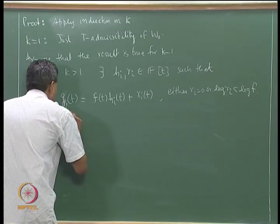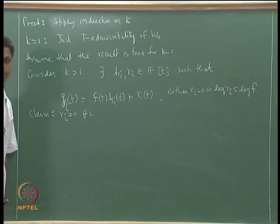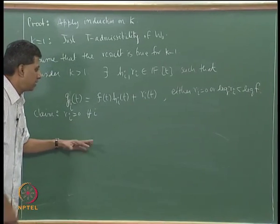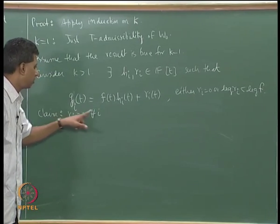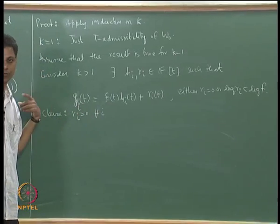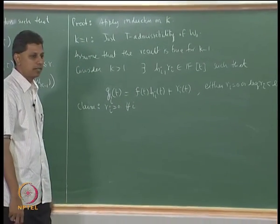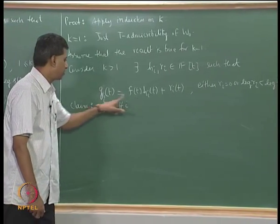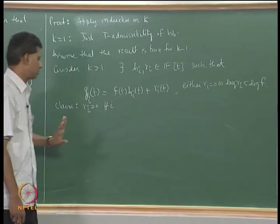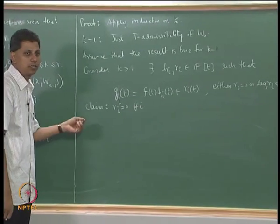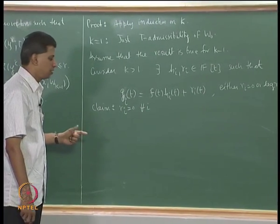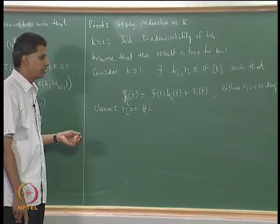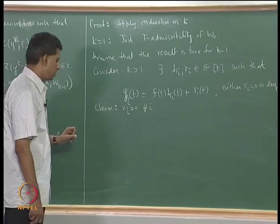The claim is that r_i equals 0 for all i. If we have proved this claim, it would follow that f divides g_i, which is what we want to show. The second part follows from admissibility. We want to show f divides g_i, so we will show r_i is 0. The proof will be by contradiction: suppose some r_i is not 0; we will get a contradiction to the hypothesis that the result is true for index k minus 1.